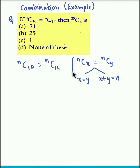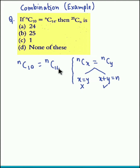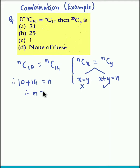Now if you observe in the given equation, the first possibility is not applicable — we cannot say 10 is equal to 14, so we cannot apply x equal to y. So we go with x plus y equal to N, where x is 10 and y is 14. Therefore, 10 plus 14 equals N, so N is equal to 24.